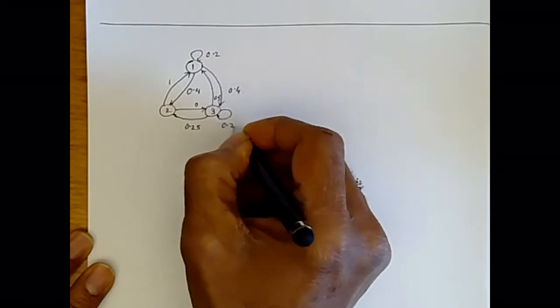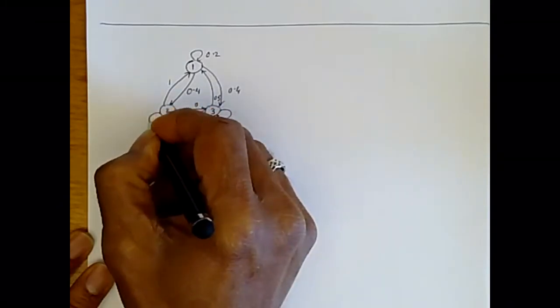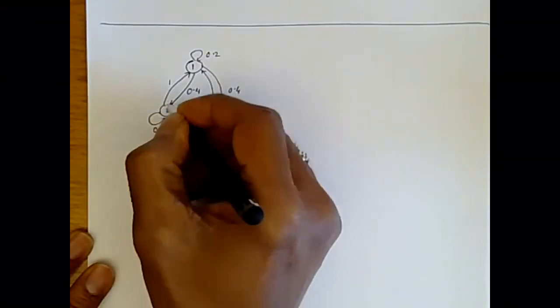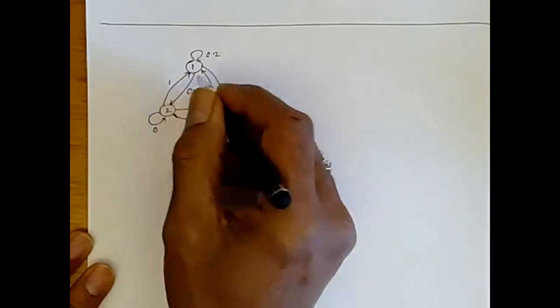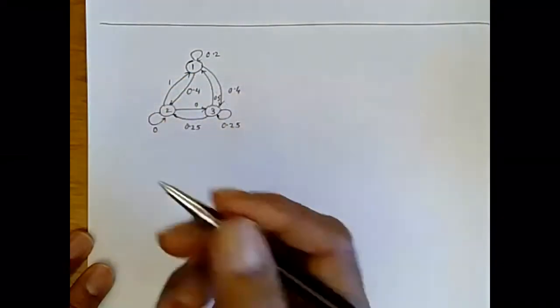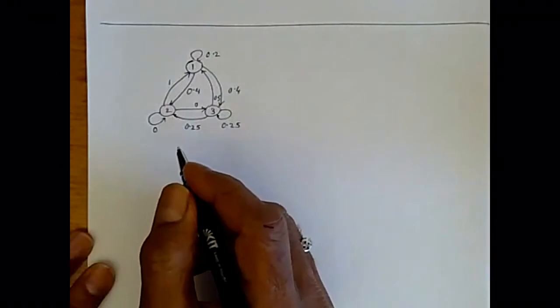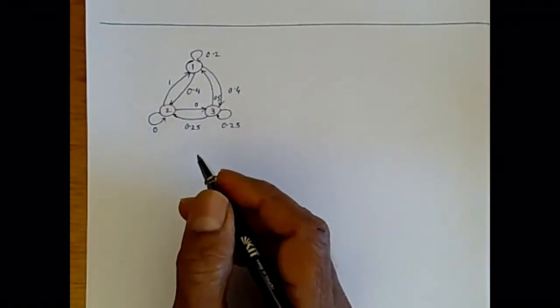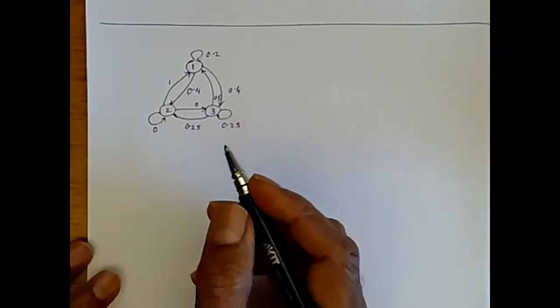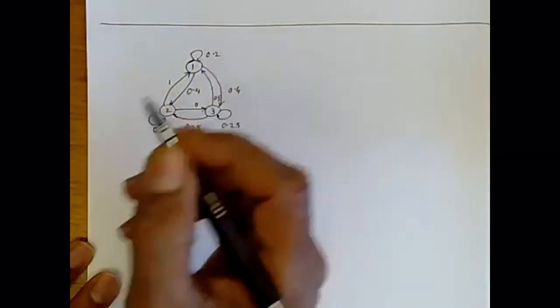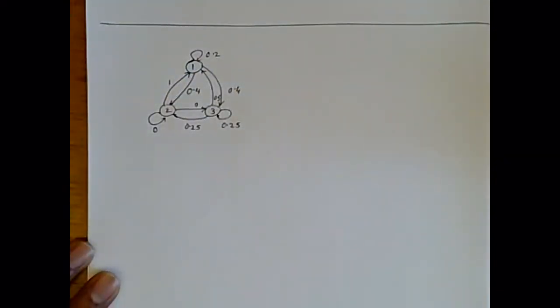So this is going to be 0.25, and this is an arc with zero because it's going out with probability one. So this is a state diagram which shows the transition probabilities between the different states, and it completely represents what the Markov process is doing.